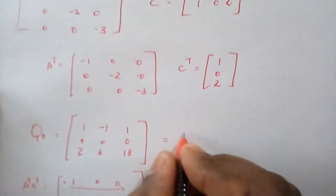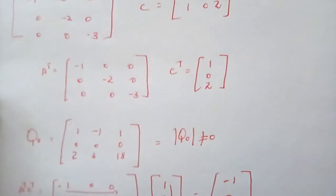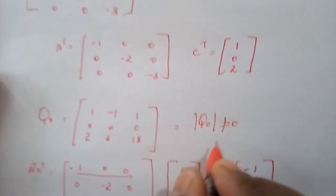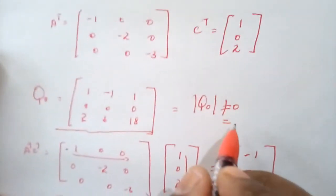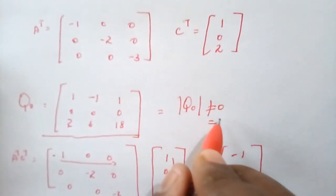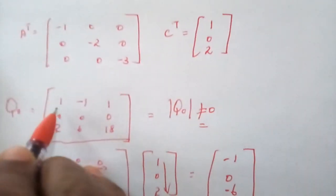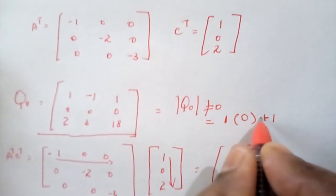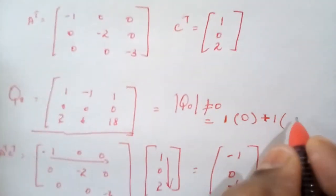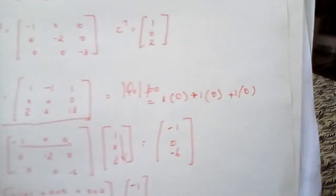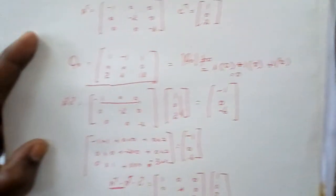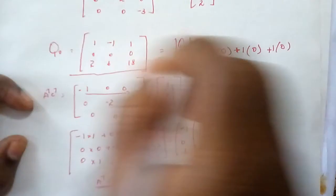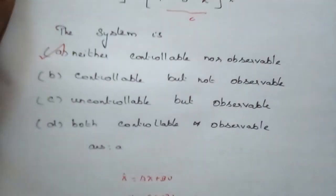To check observability, the determinant of Q0 must not be equal to 0. Checking the determinant: starting from the first element 1, cross-multiplying gives 0. Adding the remaining terms also gives 0. The determinant is equivalent to 0. Since the determinant equals 0, the system is not observable. Therefore, for the provided state equation and output equation with A, B, C matrices, the system is neither controllable nor observable. That is the correct answer.